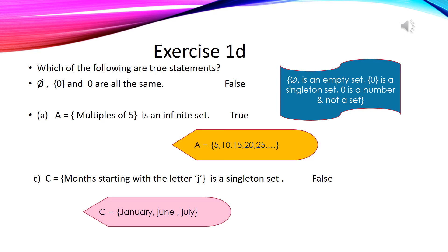Come to the next statement, which is a set of multiples of five is an infinite set. So yes, it is true. Why? Because the set of multiples of five starts from 5, 10, 15, 20, 25 and so on. And we will not be able to count the last element of this set, that's why this statement is considered true.